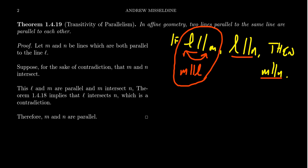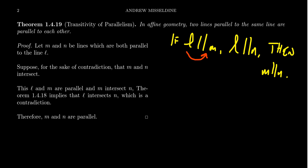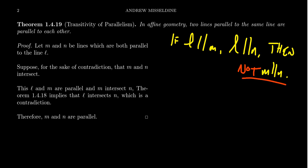We will prove transitivity as a consequence of Proclus Lemma. Let's take the assumptions: assume that M and N are both parallel to the line L. Then for a proof by contradiction, suppose M is not parallel to N — so let's say they intersect each other.